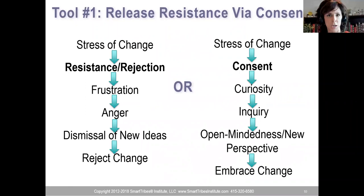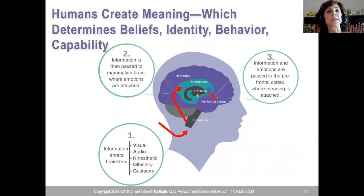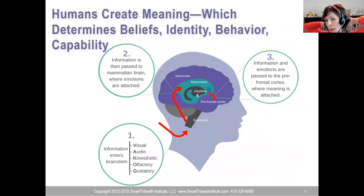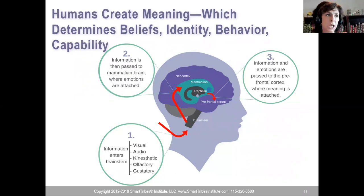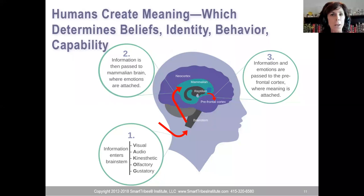Consent isn't saying it's okay — consent is simply saying 'it is.' It's being present to it. Visual, auditory, kinesthetic input — an email, something somebody says — comes into your reptilian brain, then passes to the mammalian brain where emotions are attached: 'I feel offended.' Then we go to the prefrontal cortex where we make meaning: 'this guy is arrogant, he hurt my feelings.' It's all just a story. As Shakespeare said, 'nothing is good or bad, only thinking makes it so.' He was talking exactly about meaning-making.